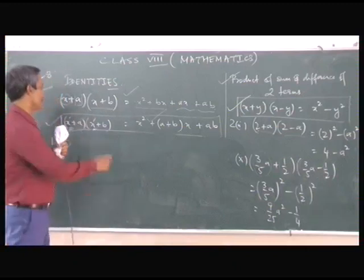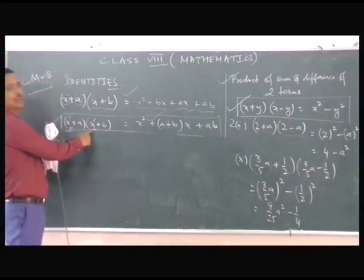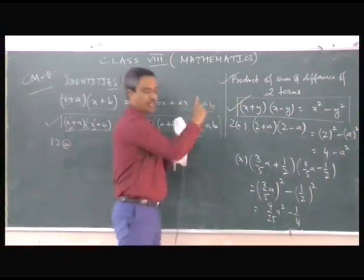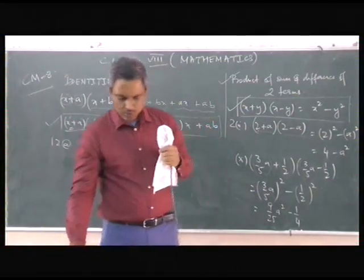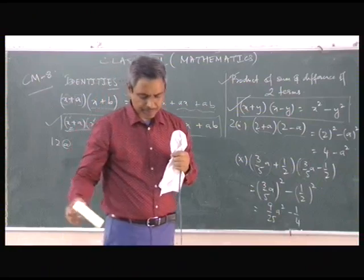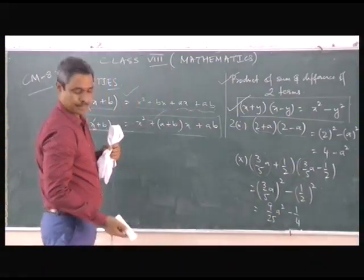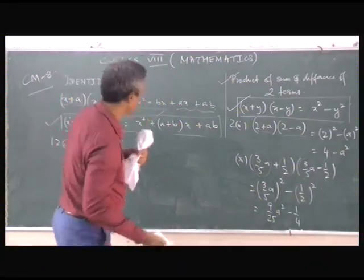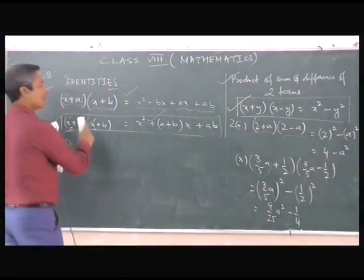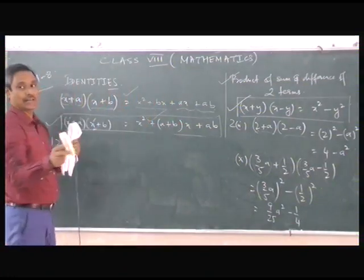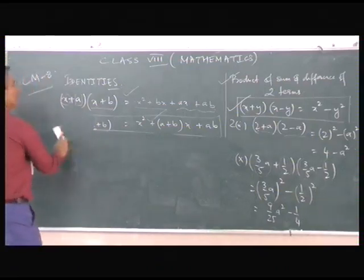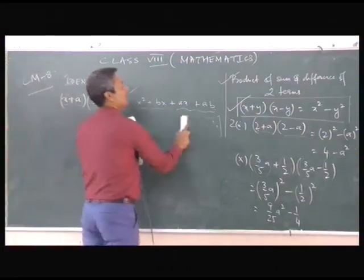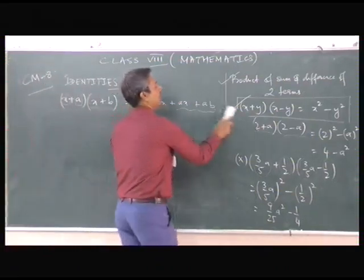So I have shown you how to use both identities from the Concise book. Question 1 uses the (x + a)(x + b) identity, and Question 2 uses the product of sum and difference identity. Now let us move on to look at Question 3. I am going to remove both identities — the formula should now be in your mind or in your copy, and you will be alert to see which identity is being used.